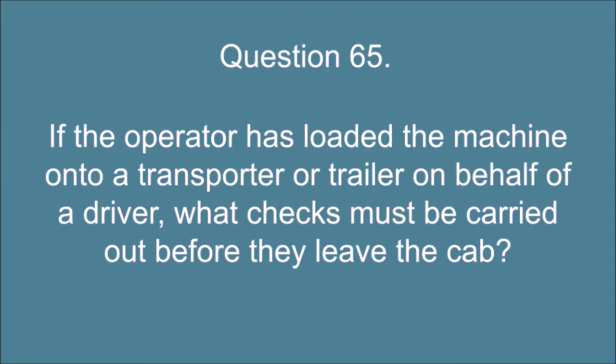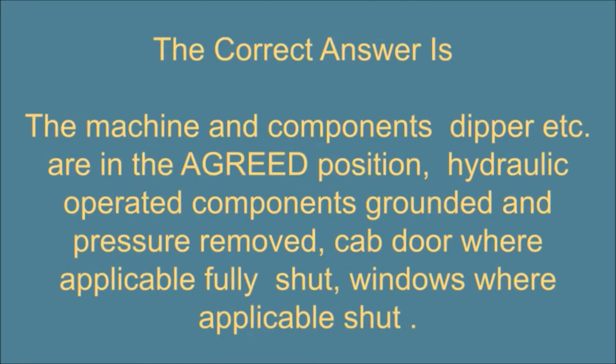If the operator has loaded the machine onto a transporter or trailer on behalf of a driver, what checks must be carried out before they leave the cab? The correct answer is, the machine and components dipper etc. are in the agreed position, hydraulic operated components grounded and pressure removed, cab door, where applicable, fully shut, windows, where applicable, shut.